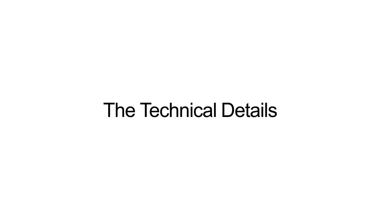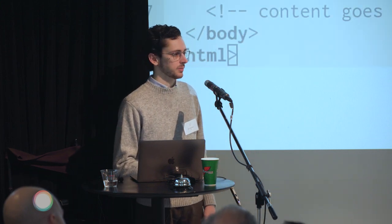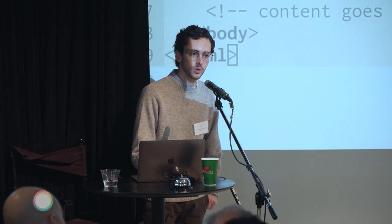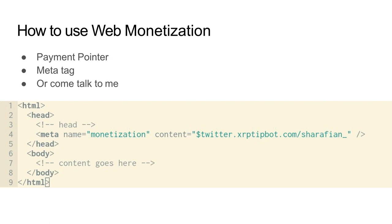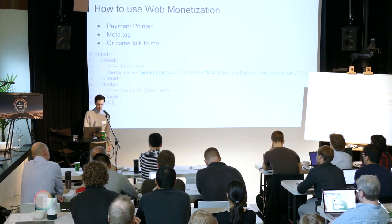Now I want to go quickly over some technical details. Web monetization is essentially the following HTML tag: a meta tag where the name is 'monetization' and the content is your Interledger payment pointer. Your Interledger payment pointer is essentially like your email address or routing number for money — it's how you tell people how to receive payments on Interledger. You can go to any wallet that supports Interledger. Right now, the easiest way to do that is xrptipbot — get a payment pointer, put it on your site, and now anybody who uses Coil and goes to your site can start paying you.